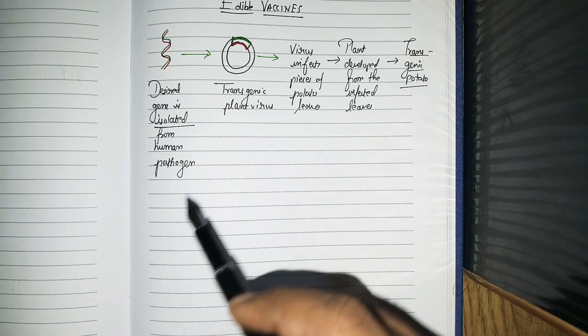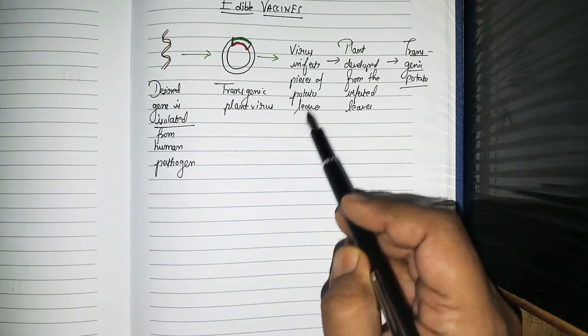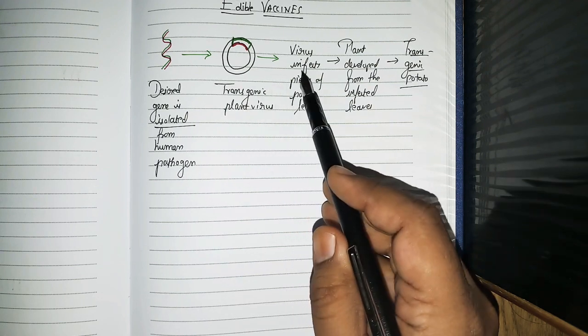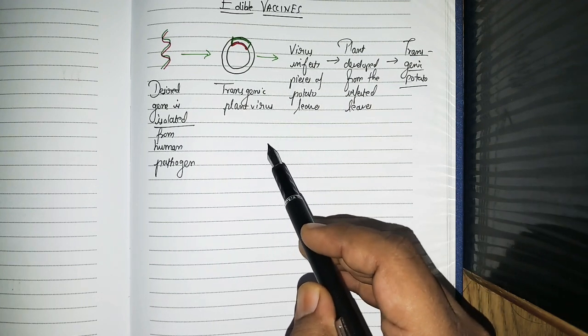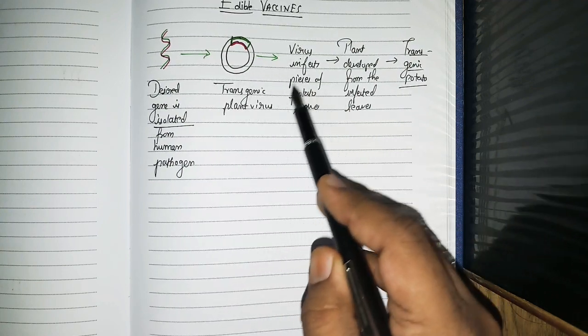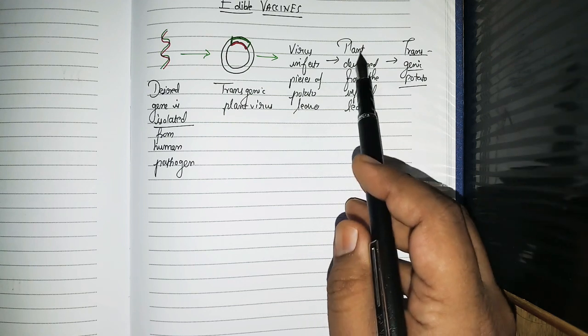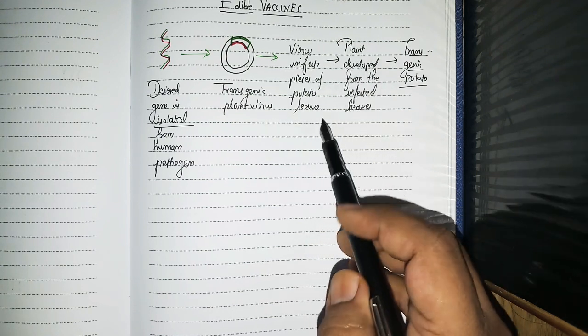Then we have some potato leaves on which these plant viruses are feeding upon, and they will spread across these leaves.